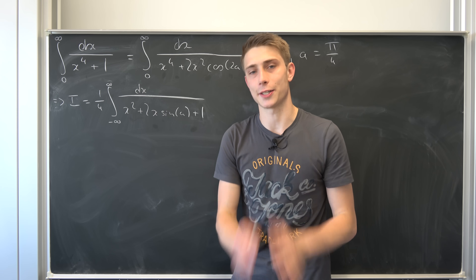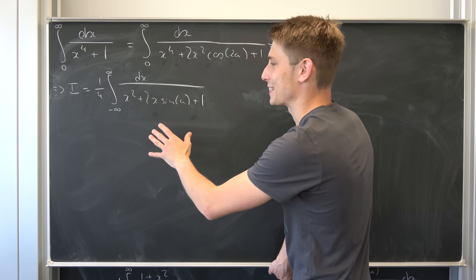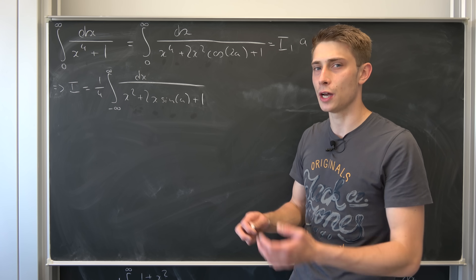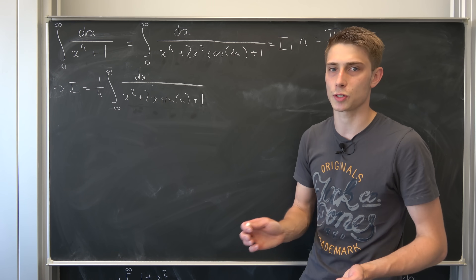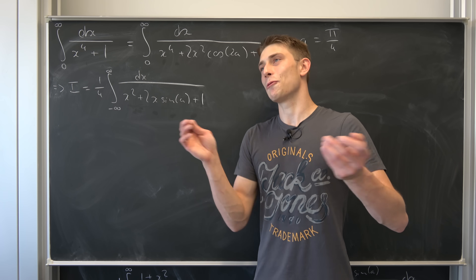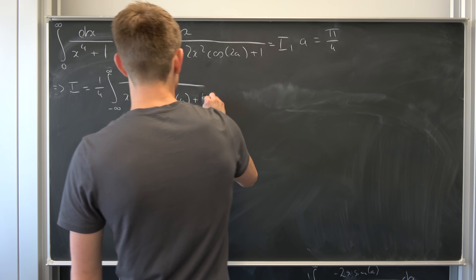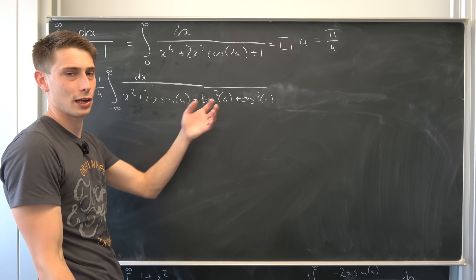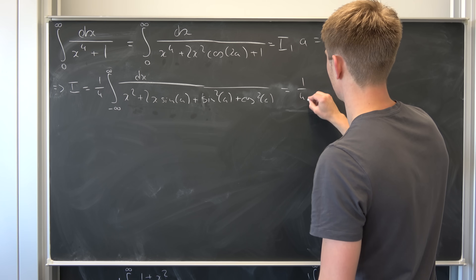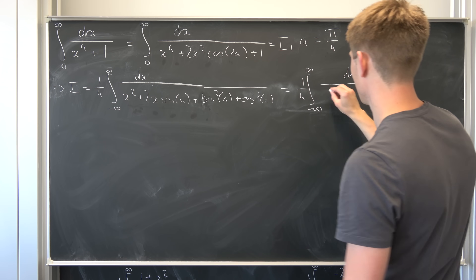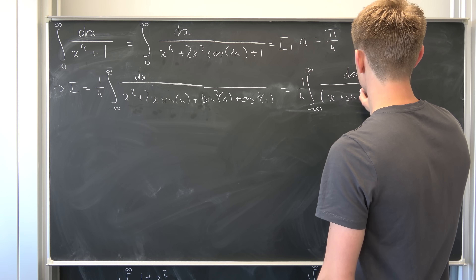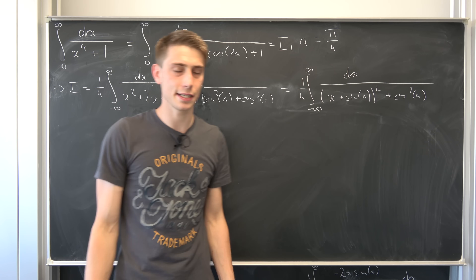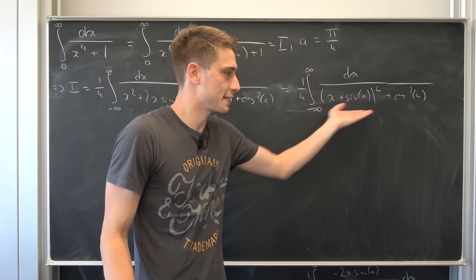Now we are almost done. This denominator right here looks nearly like something we could factor, because we have x squared plus 2x sine of a. All that's missing is a sine squared of a to use the binomial formula. But we have a 1, and 1 is nothing but sine squared of a plus cosine squared of a. So this expression allows us to factor: we end up with 1 over 4 times the integral from minus infinity to infinity of dx over (x plus sine of a) whole squared plus cosine squared of a. Solving this is easy — it's going to give us an expression for the inverse tangent.